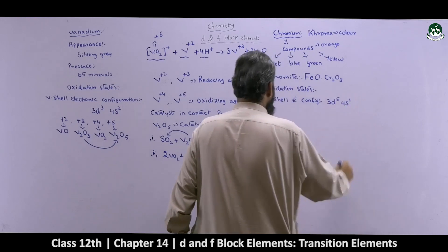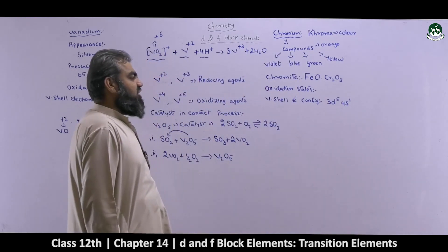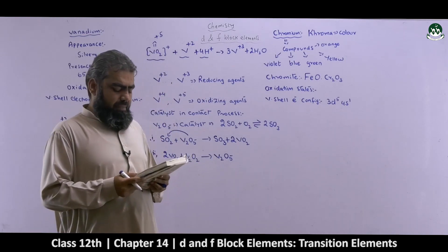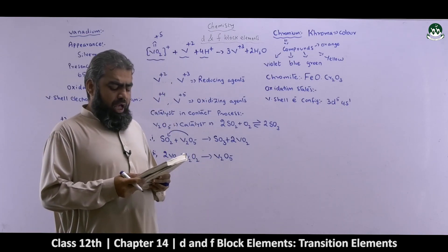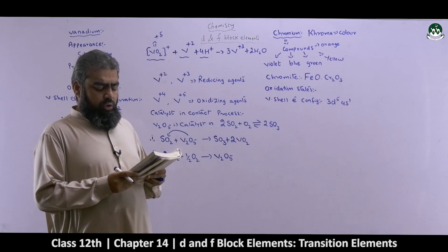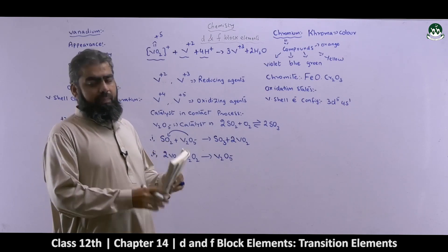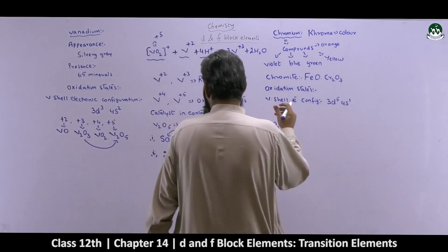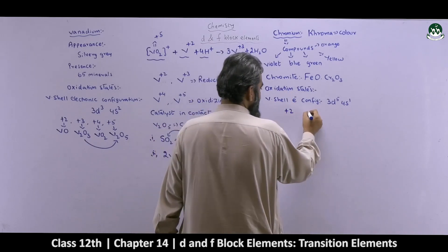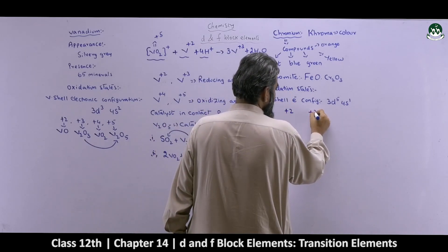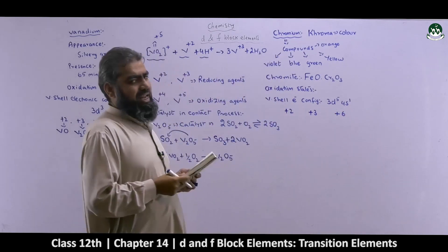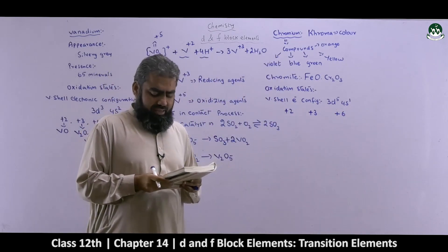The total electrons in Chromium are 6 — five are in the d-orbital and one is in the s-orbital. On this basis, the common oxidation states of chromium are plus 2, plus 3, and plus 6. These three possibilities exist for chromium.